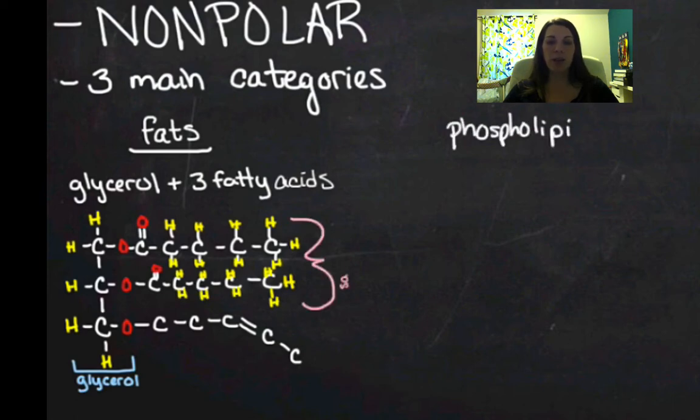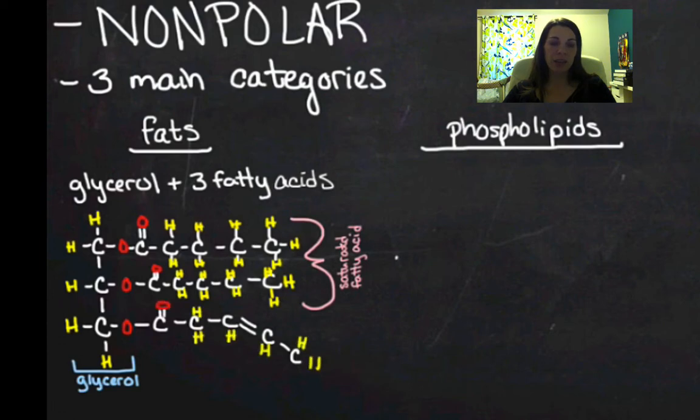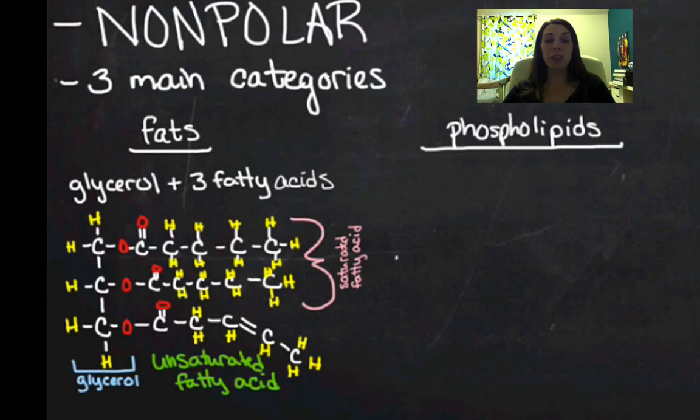Let me draw in the rest of my hydrogens and oxygens there. And let's look at my fatty acids. There are saturated fatty acids. And these down here at the bottom are an unsaturated fatty acid. So the saturated fatty acids are completely full of hydrogen. Whereas if you look at this one that's down here at the bottom, it's got that double bond in it. And so that's going to be an unsaturated fatty acid.